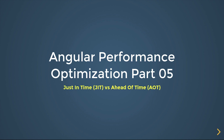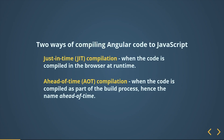Now moving into today's topic — this is the fifth video of the Angular optimization playlist where we will look into Angular compilation. On this slide you can see the highlighted text which is today's main topic: there are two ways of compilation of Angular code to JavaScript. Before we move further, let me explain what a compiler is. A compiler is a computer program that transforms source code into computer language, translating written code into a machine-understandable format.